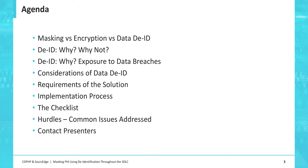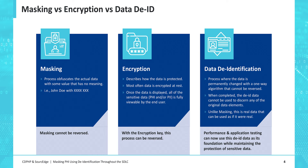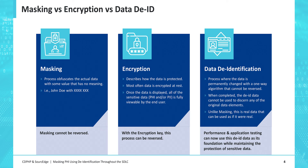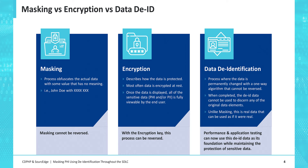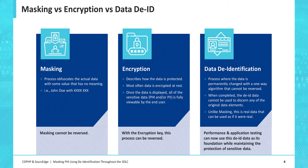When we start talking about masking and data de-identification, it's important to understand terminology first and foremost. When we think about masking, masking by definition is just obfuscating the data. It doesn't really have any value, but it does protect. But that also means if it doesn't have any value, you really can't use it.